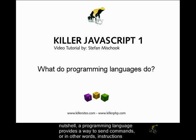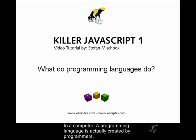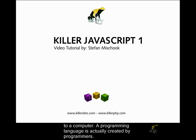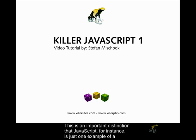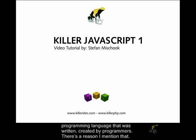In a nutshell, a programming language provides a way to send commands — or in other words, instructions — to a computer. A programming language is actually created by programmers. This is an important distinction: JavaScript, for instance, is just one example of a programming language that was written and created by programmers. And there's a reason I mentioned that, which leads to the next point.